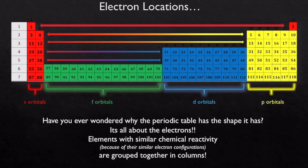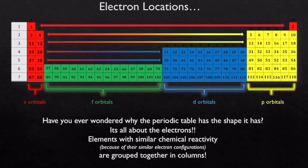Have you ever wondered why the periodic table has the shape that it has? The reason is all about the electrons. When the periodic table was organized over a long period of time, elements with similar chemical reactivity were put into columns or groups. We now know that the reason those elements have similar chemical reactivity is because they have similar valence electron structures — their valence electrons on the outside are the same.